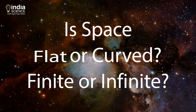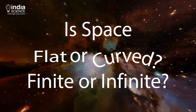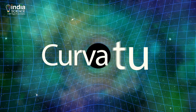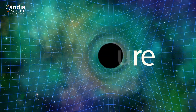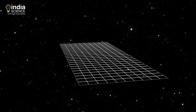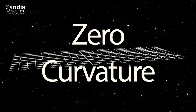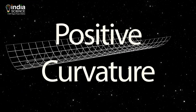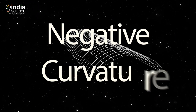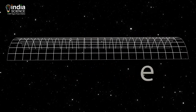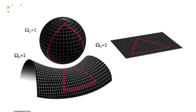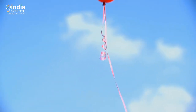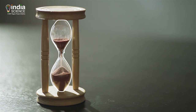But is space flat or curved? Finite or infinite? Knowing this can tell us about the shape of the universe. We can explain that using curvature. If the space is flat, like a carpet, then we call it zero curvature. If it is bent inwards, then we call it positive curvature. And if outwards, then that's negative curvature. Hence, there are three possibilities for the shape of the universe: flat like a carpet, spherical like a balloon, or hyperbolic.